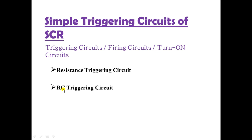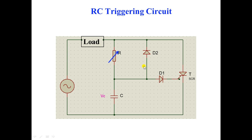This lecture covers the RC triggering circuit. The circuit has a supply voltage VS equal to VM sin(ωt), meaning the peak value is VM. It includes a load, a variable resistor R, a capacitor C, diode D2, diode D1, and the thyristor. The circuit is called the RC triggering circuit because a resistor and a capacitor are used here to turn on the SCR.